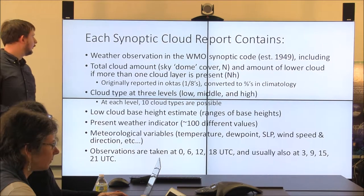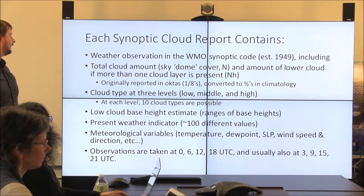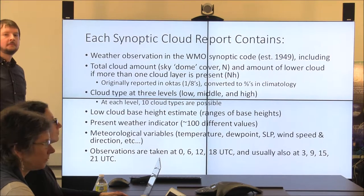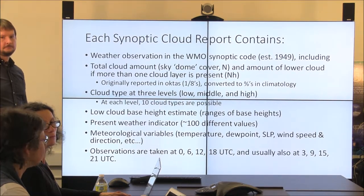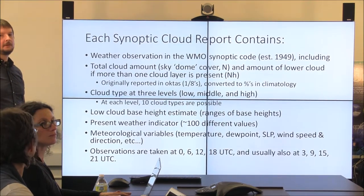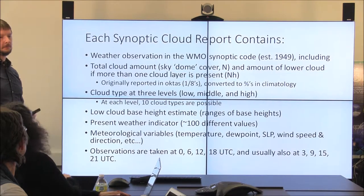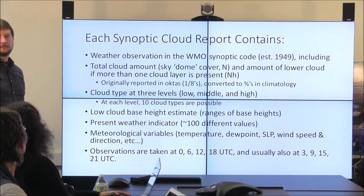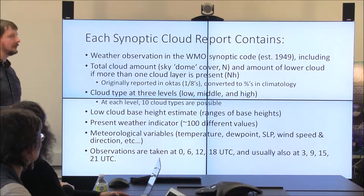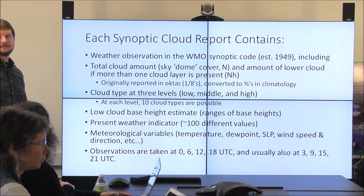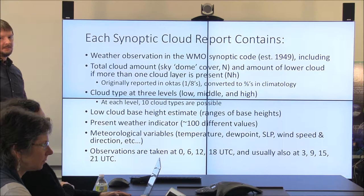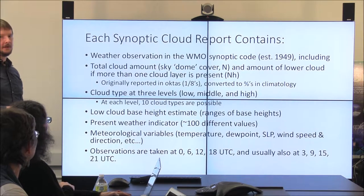Each of these reports in this climatology — about 350 million total — includes a cloud base height estimate. There are different range bins, basically a number between one and nine. One would represent a low stratus around 50 to 200 meters, for example. We're a little dubious about those estimates because it's hard to know how accurate they'd ever be, so we don't really focus on base height in this climatology, but it's there if you want to look at it.